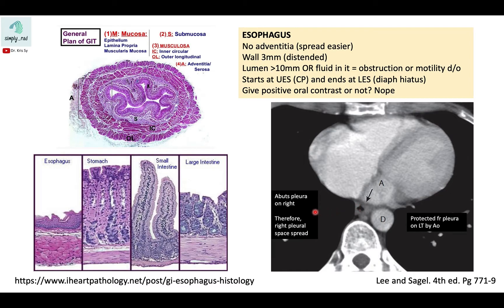Important anatomical relations: the esophagus abuts the pleura on the right side, so pathologies in the esophagus or pleura can spread to each other. On the left side, the esophagus is protected from the pleura by the descending aorta.